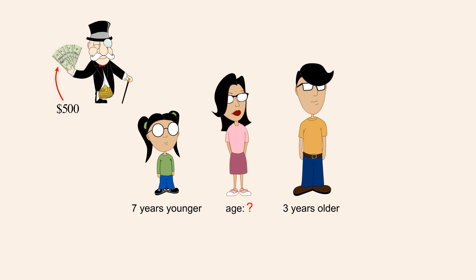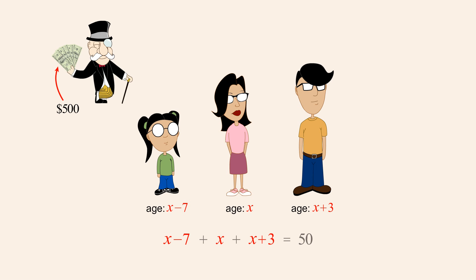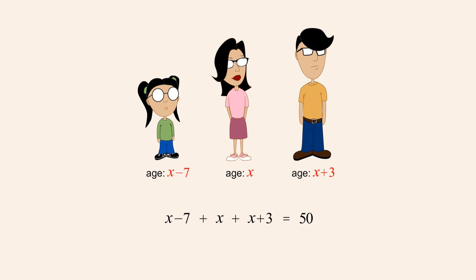We start by assigning a variable to the quantity we want to find — Adrian's age. Let's choose the variable x to represent this quantity. Since Adrian's brother is three years older than Adrian, her brother's age is x plus three. And since her sister is seven years younger, her sister's age is x minus seven. Since their uncle is giving them a total of five hundred dollars, which is ten dollars for each year of their age, the sum of their ages must be fifty. We can now solve this linear equation to determine the value of x, Adrian's age.